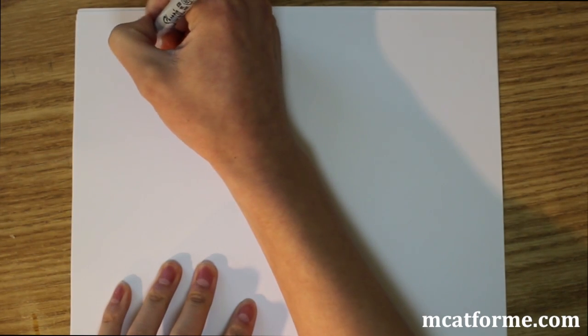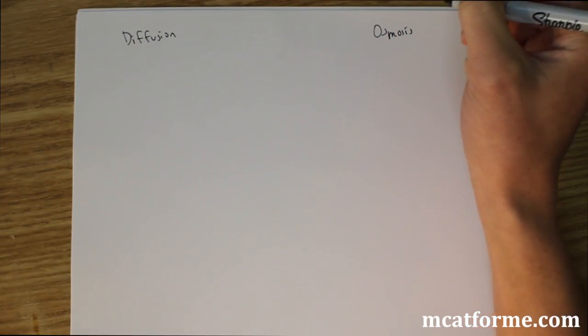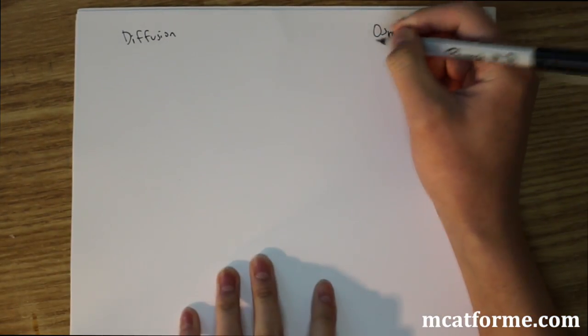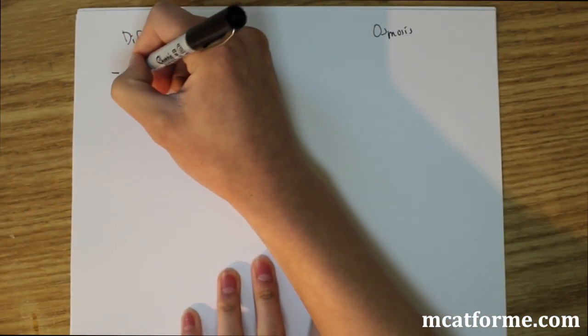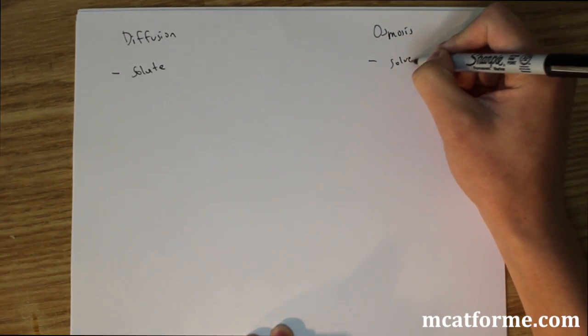So the first thing I want to talk about is diffusion and osmosis. So what's the difference between these? So they're fairly similar but fairly distinct. So diffusion is the passing of solute versus osmosis is the passing of solvent. So what does that mean?